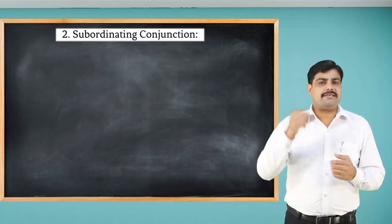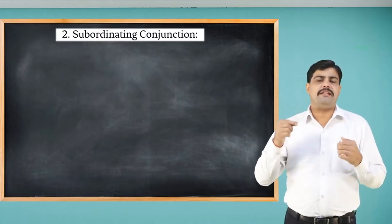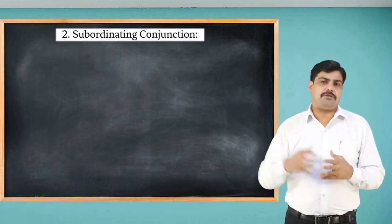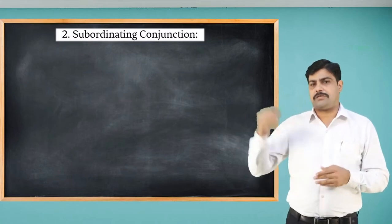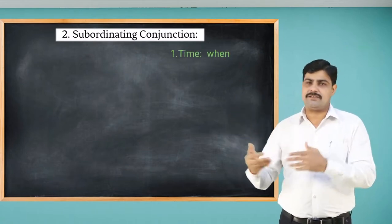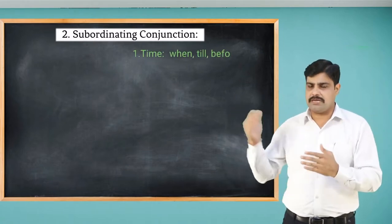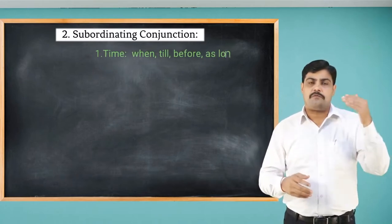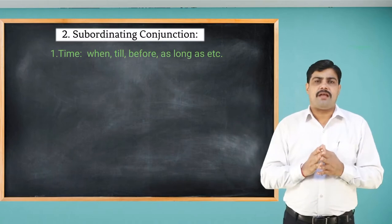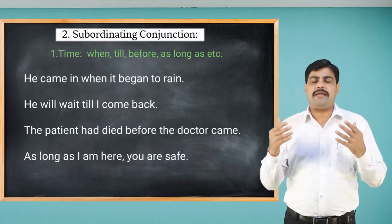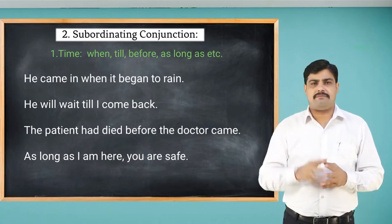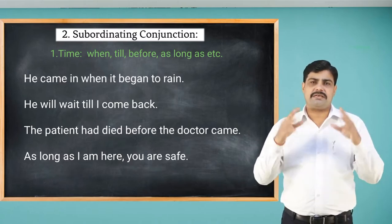Now let's see how conjunctions function differently in sentences. For time, we use: when, till, before, as long as. For example, the sentence 'He came in when it began to rain' — here 'when' is a conjunction connecting two clauses.